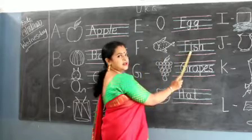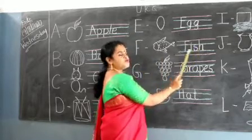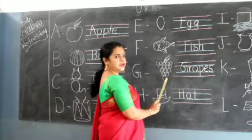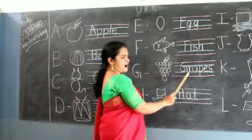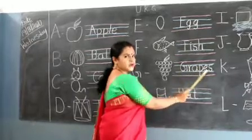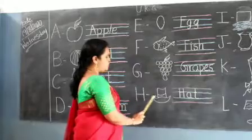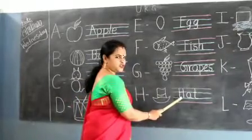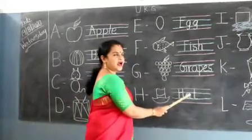Fish. G for Grapes. G, R, A, P, E, S, Grapes. H for Hat. H, A, T, Hat.